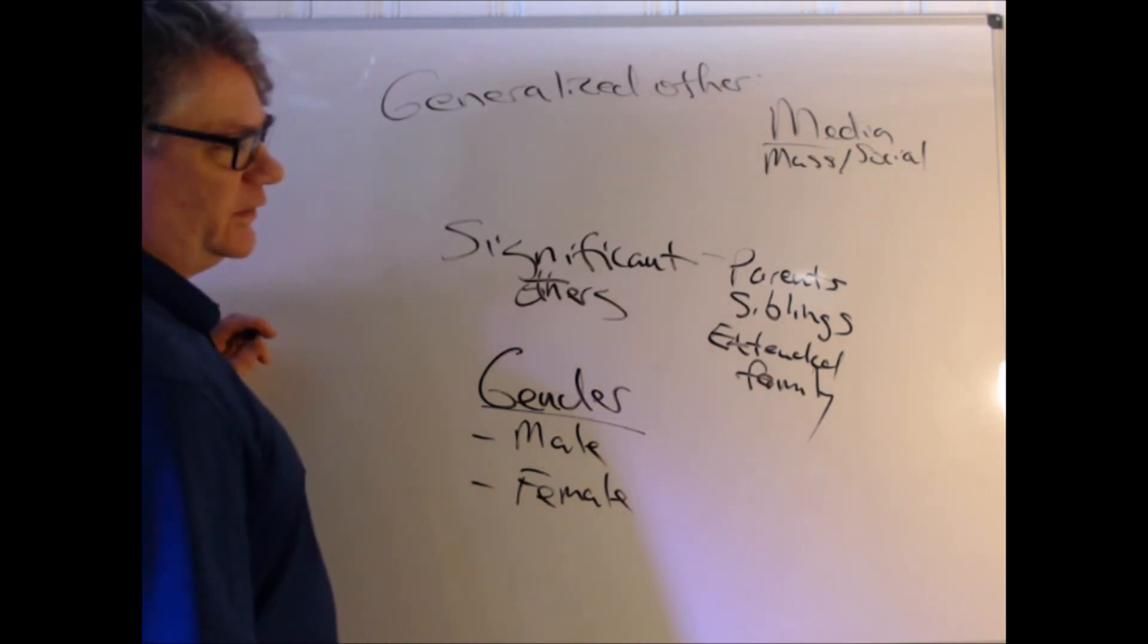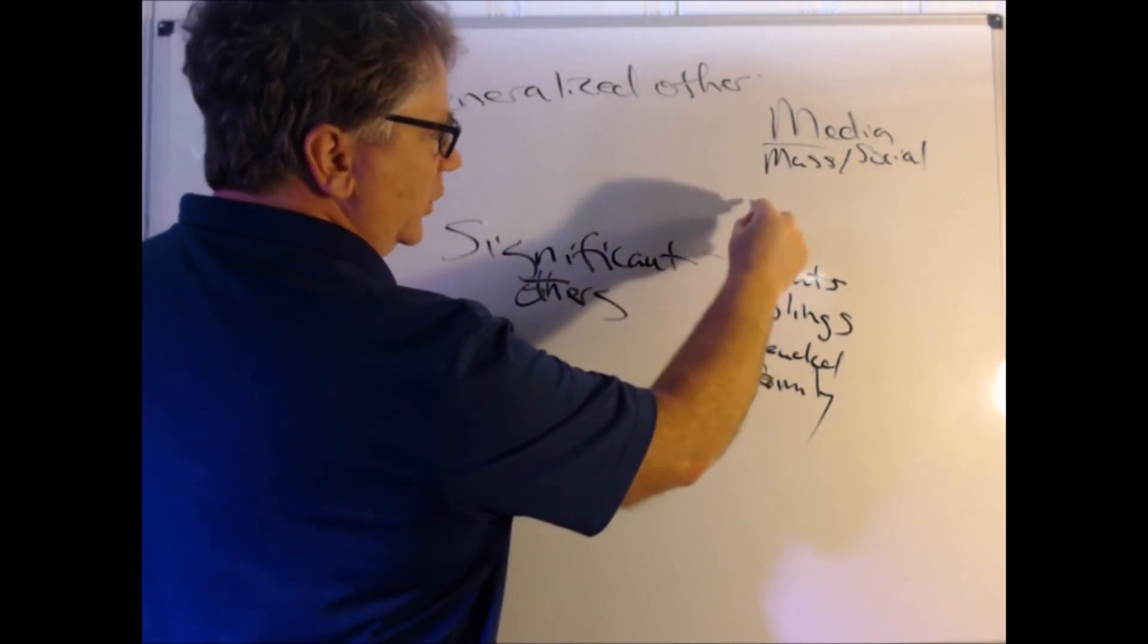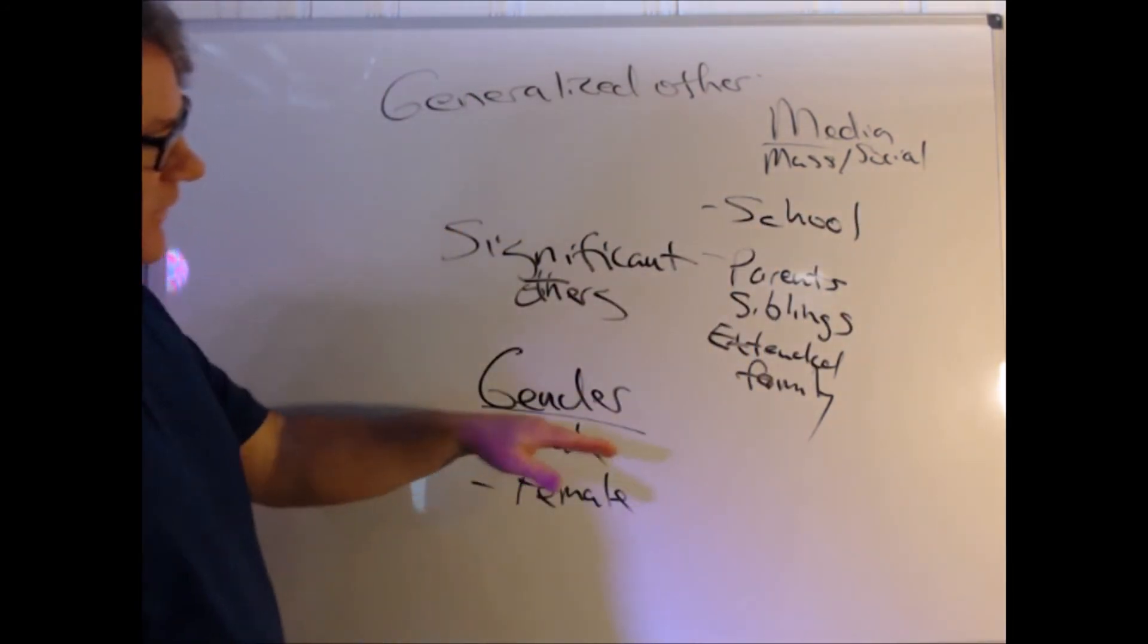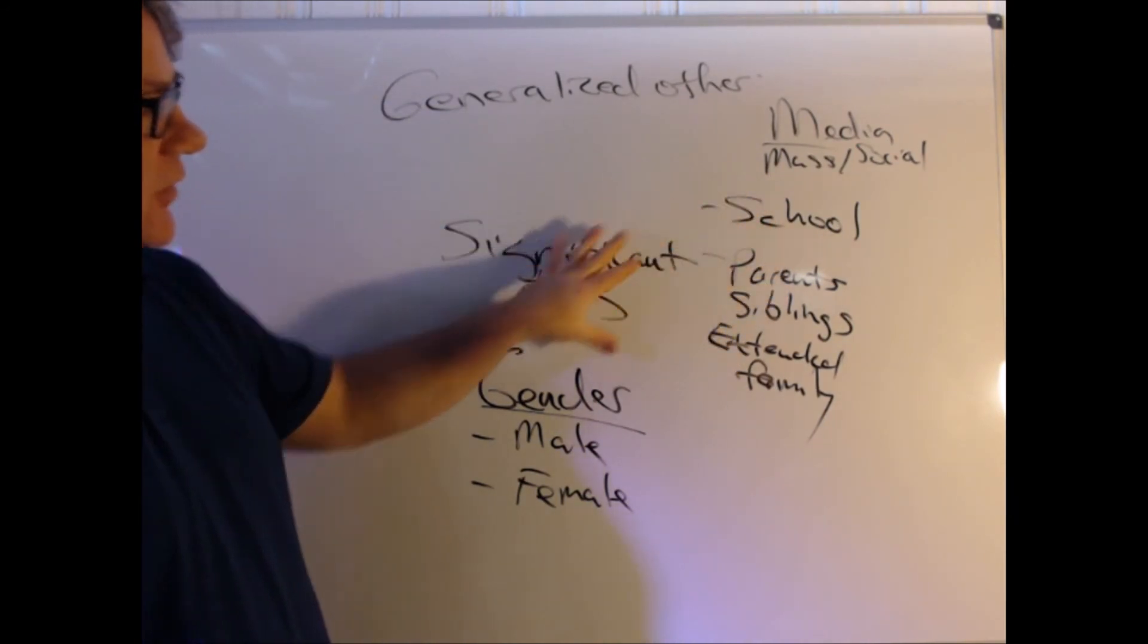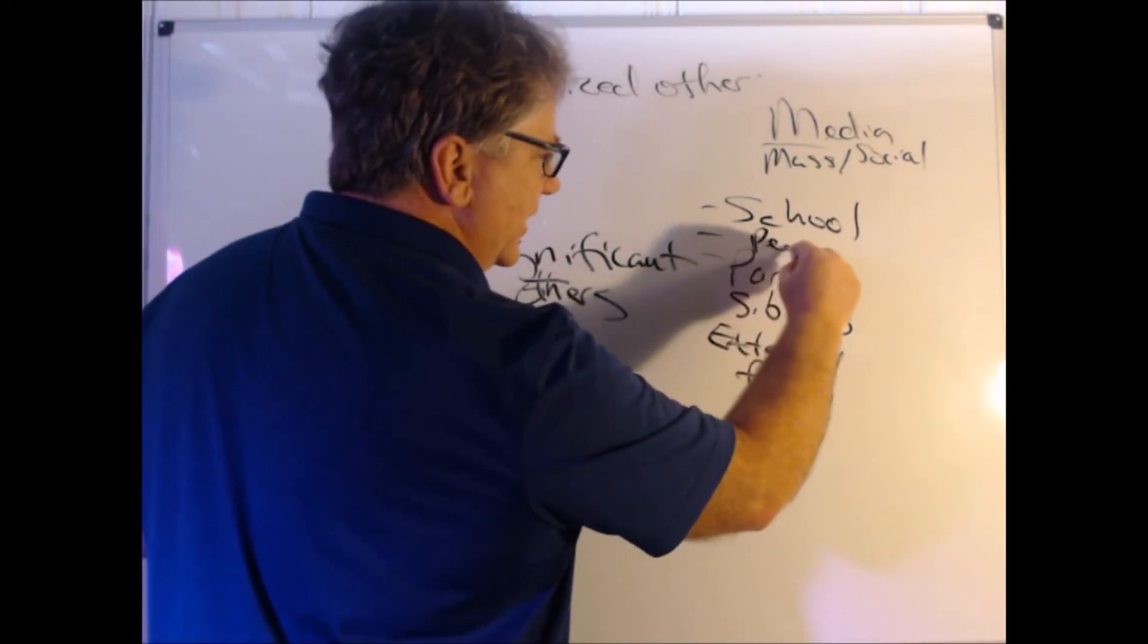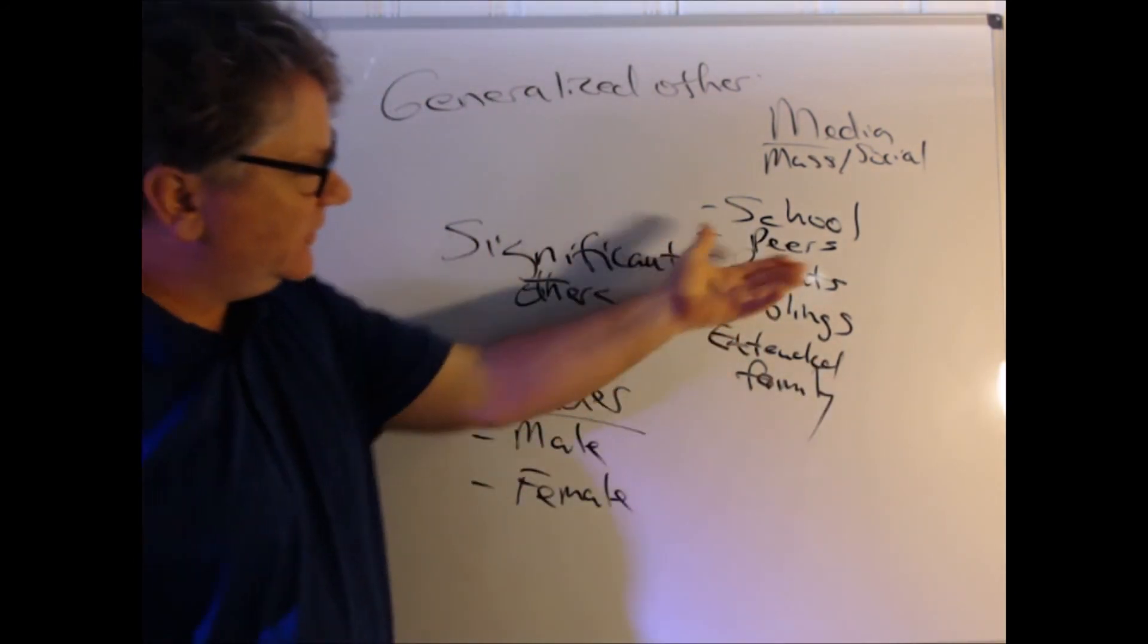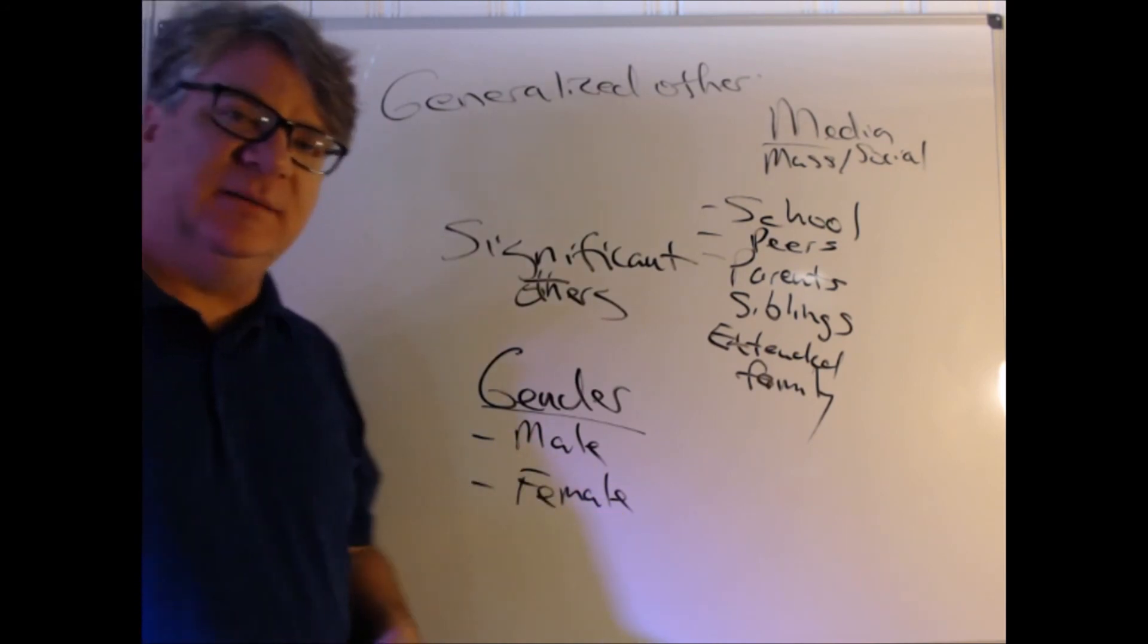Some other agents of socialization: family, media, we'll put school right here. Yes, I'm kind of moving up the ladder of significant others and generalized other. School and parents are closer to being significant others, teachers of course. Friends, we'll put friends and peers right here. Those are the agents of socialization. How do they influence our understanding of what it means to be male or female?